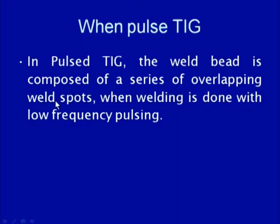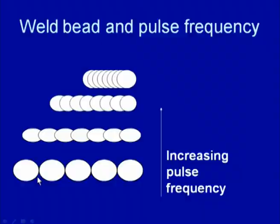In the pulsing process, the weld bead is composed of a series of overlapping weld spots. When welding is done with very low frequency, these effects can be clearly seen. If the peak current comes into play after a certain interval of time — especially when working with very low pulse frequency — the heat generated develops discrete spots. This is the situation when very low pulse frequency is used.